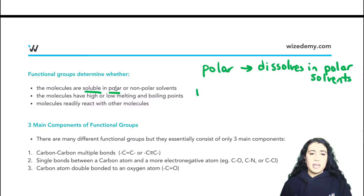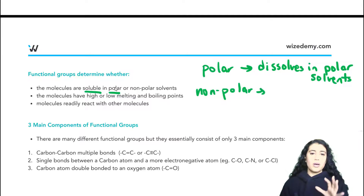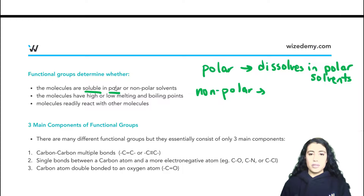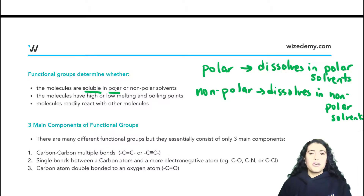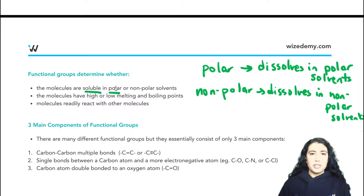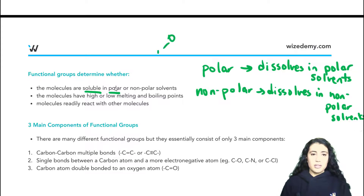Whereas if something is nonpolar, it likes to be around things that are like it — it likes to dissolve in other nonpolar solvents. A common example is water and oil: oil is just long carbon chains, so they are very nonpolar, whereas water has hydrogen bonds.